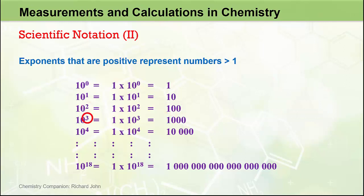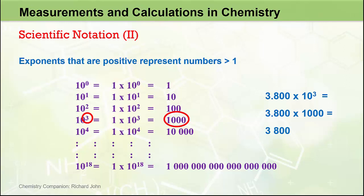10 to the power of 3, or 10 cubed, is equal to 10 times 10 times 10, or 1000. So 3.800 times 10 to the 3 actually represents 3.800 times 1000, which equals 3800. In this case, the position of the decimal place in the coefficient has moved three spaces to the right, corresponding to an exponent of plus 3. The positive value of the exponent tells us to move the decimal place to the right, and the magnitude of 3 tells us how many places to move it. So hopefully you're now getting the idea.